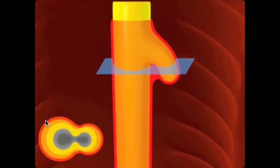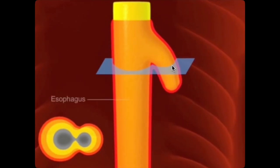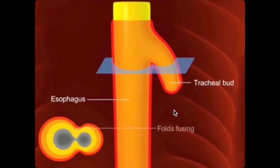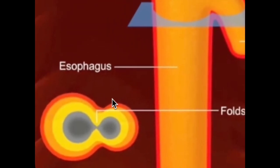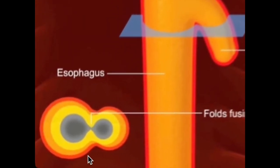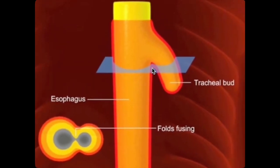When this first starts, the pharynx and the laryngotracheal tube are continuous all the way down — there's no wall separating the two. As the diverticulum evaginates caudally, two longitudinal folds are formed from the surrounding mesenchyme. These folds are called the tracheoesophageal folds. You can see this ridge of mesenchyme in the sagittal section, but it's much more obvious in the transverse section.